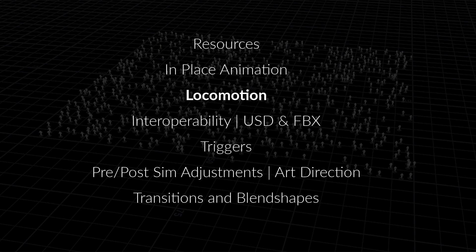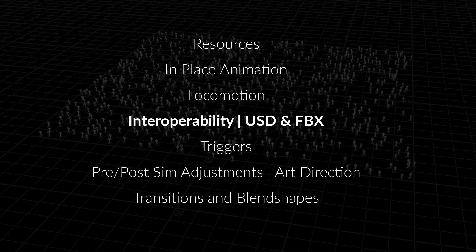Locomotion is a more advanced way of doing crowd sims. It allows for things like terrain adaptation and foot locking, and is in general a preferable way of working. In that section, I'm also going to be talking about IO — writing things out and bringing things in from USD and FBX — with particular emphasis on import, so you'll have the information you need to accommodate whatever pipeline your studio uses.